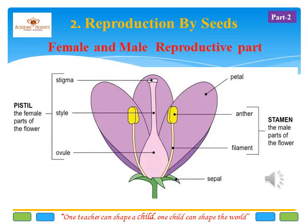Slide number 9. In this slide we are going to study about the female and male reproductive parts. As you can see in the picture, the left part is the female reproductive part and the right part is the male reproductive part. A flower has both male and female reproductive parts. There are three main female reproductive parts: stigma, style, and ovule — all three are called the pistil. The two main male reproductive parts are filament and anther, and both are called the stamen.